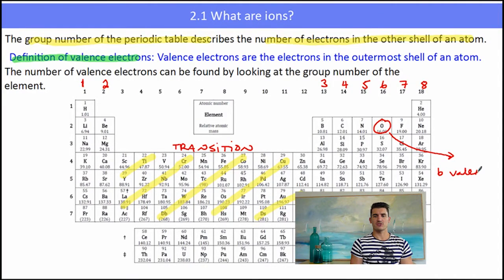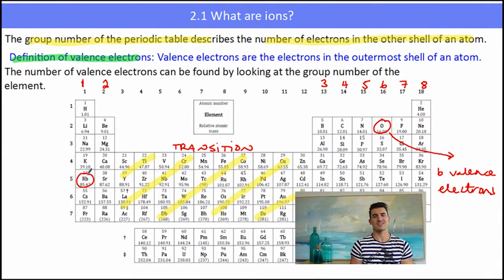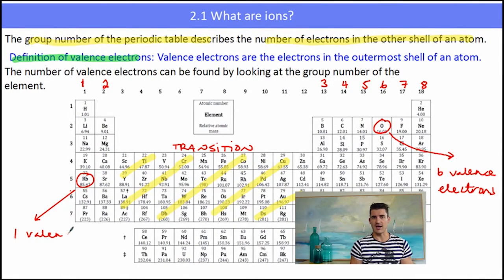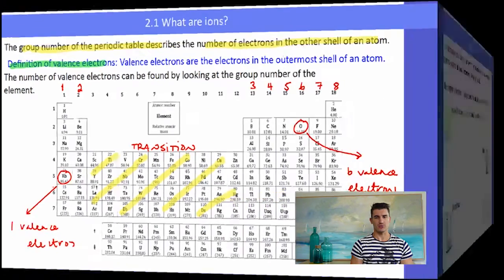If we have a look at oxygen — oxygen is in group 16, which means it will have 6 valence electrons, 6 electrons in its outer shell. Rubidium is in group 1, the alkali metals. It has 1 valence electron, 1 electron in its outer shell.